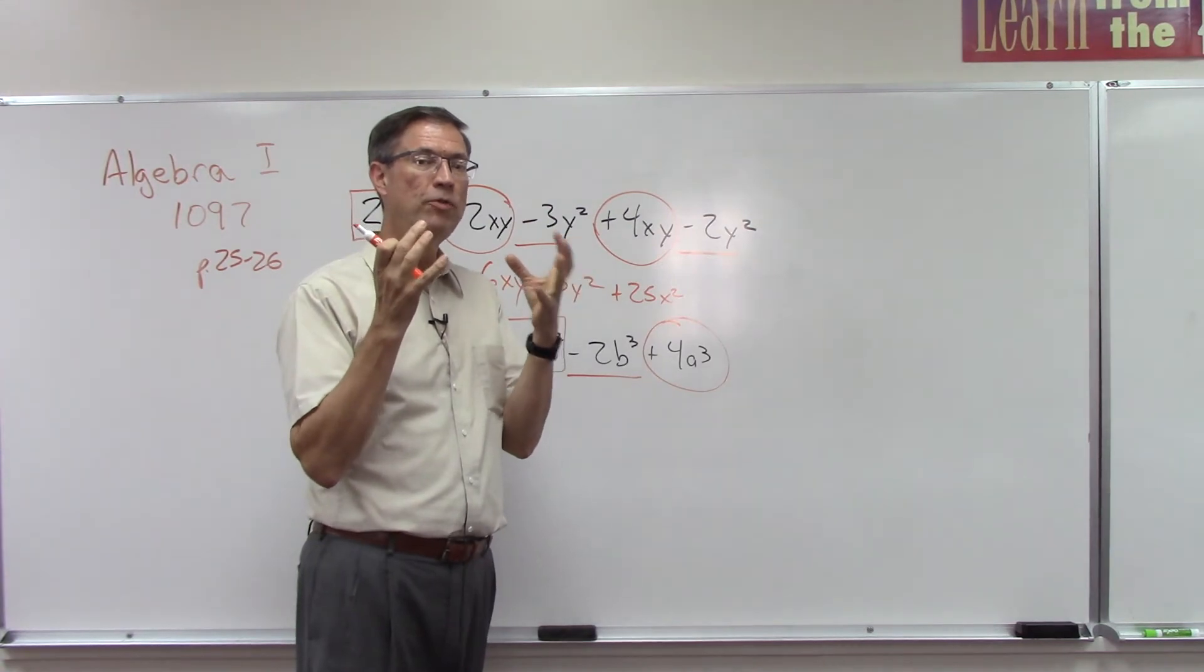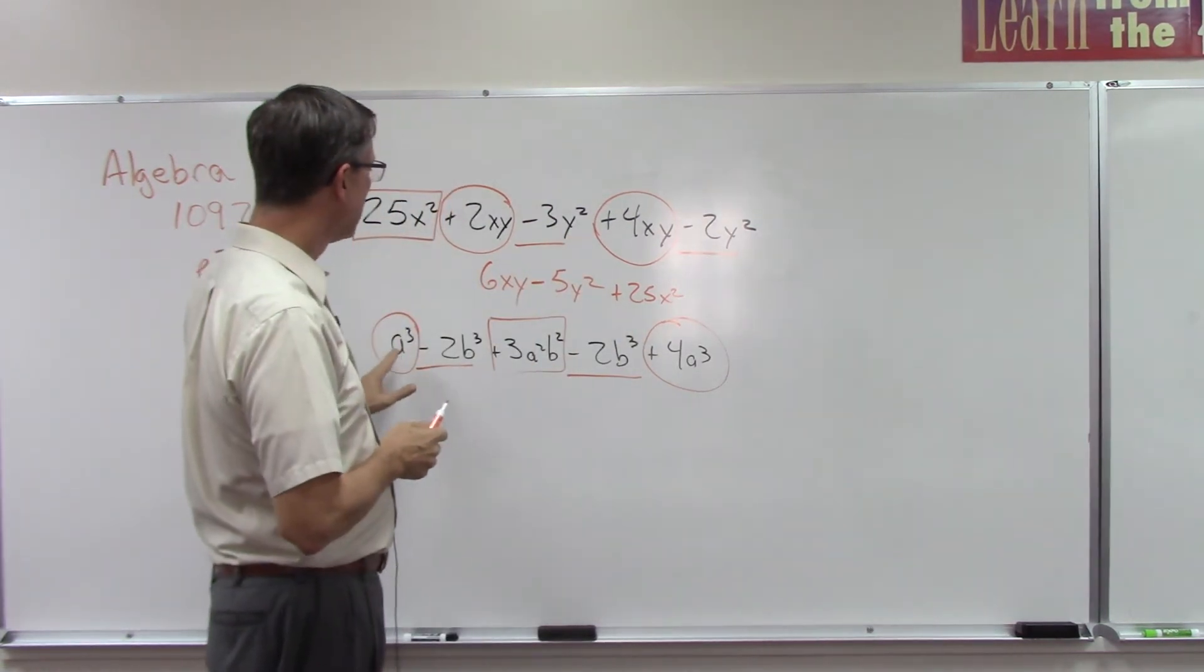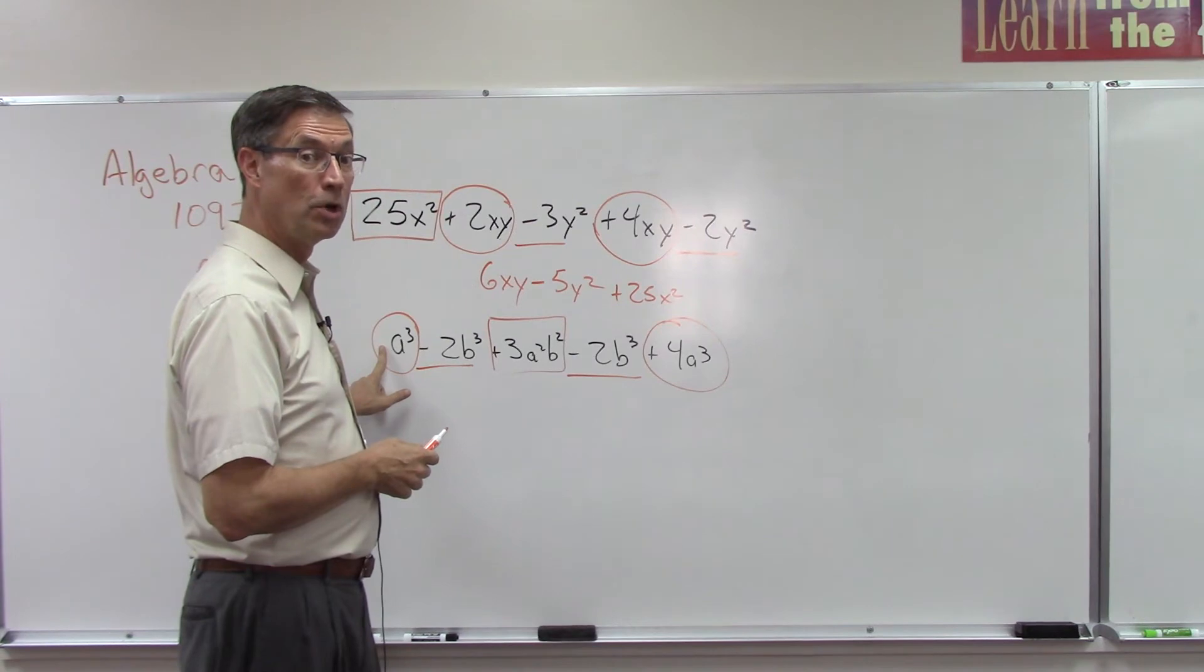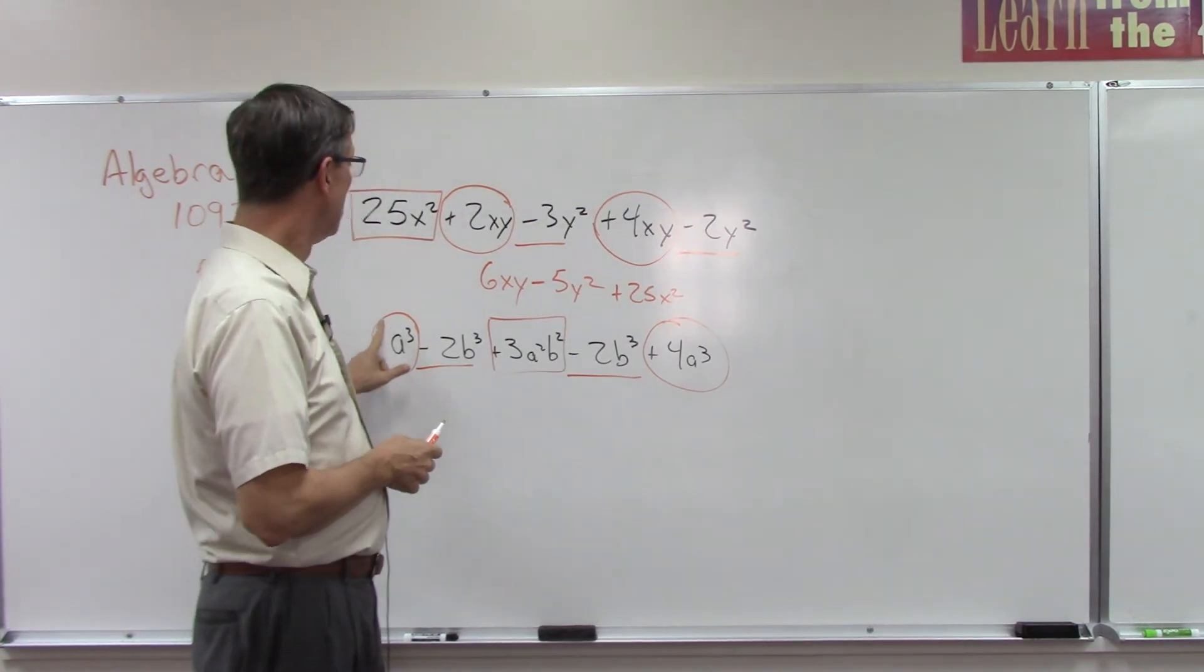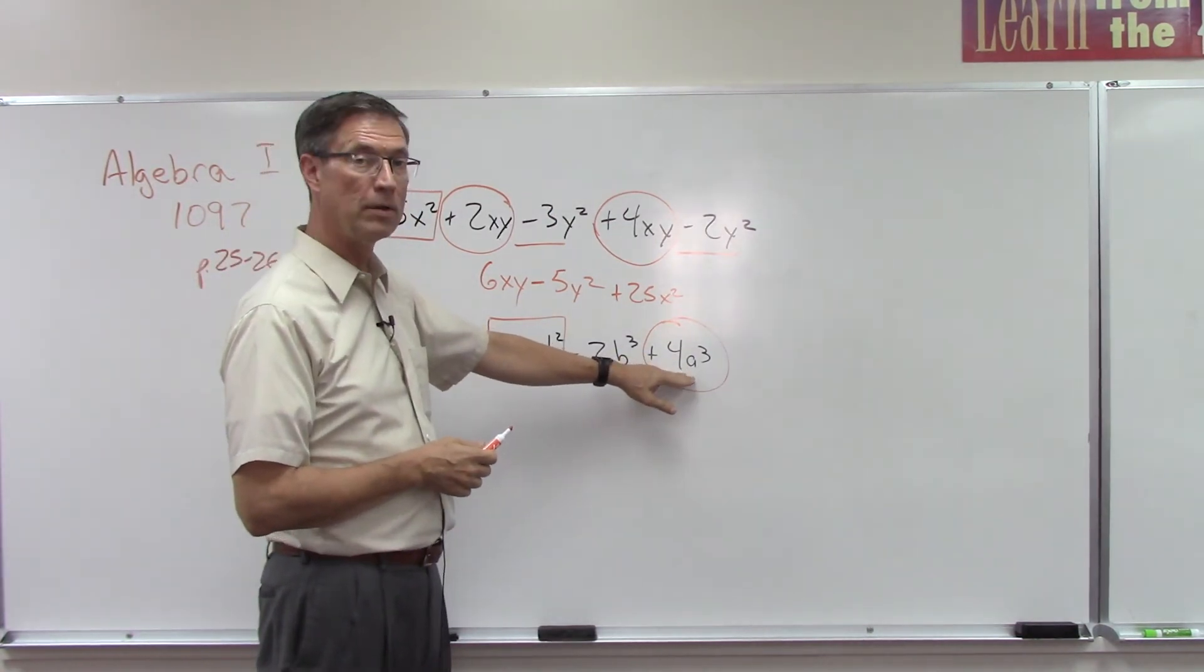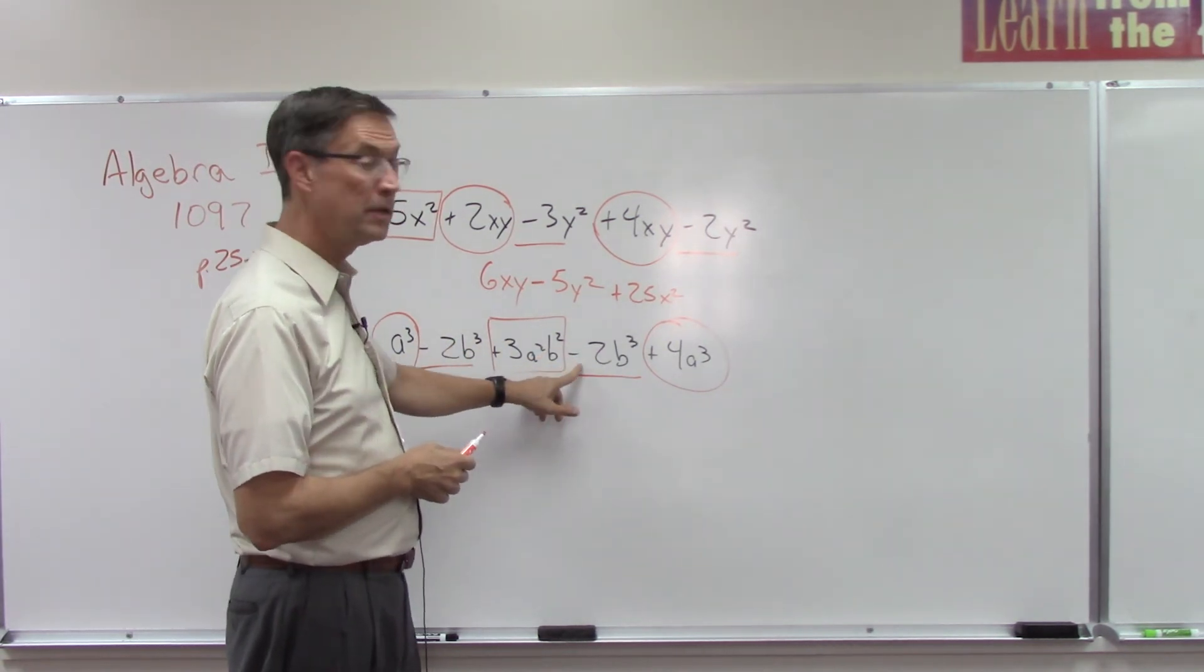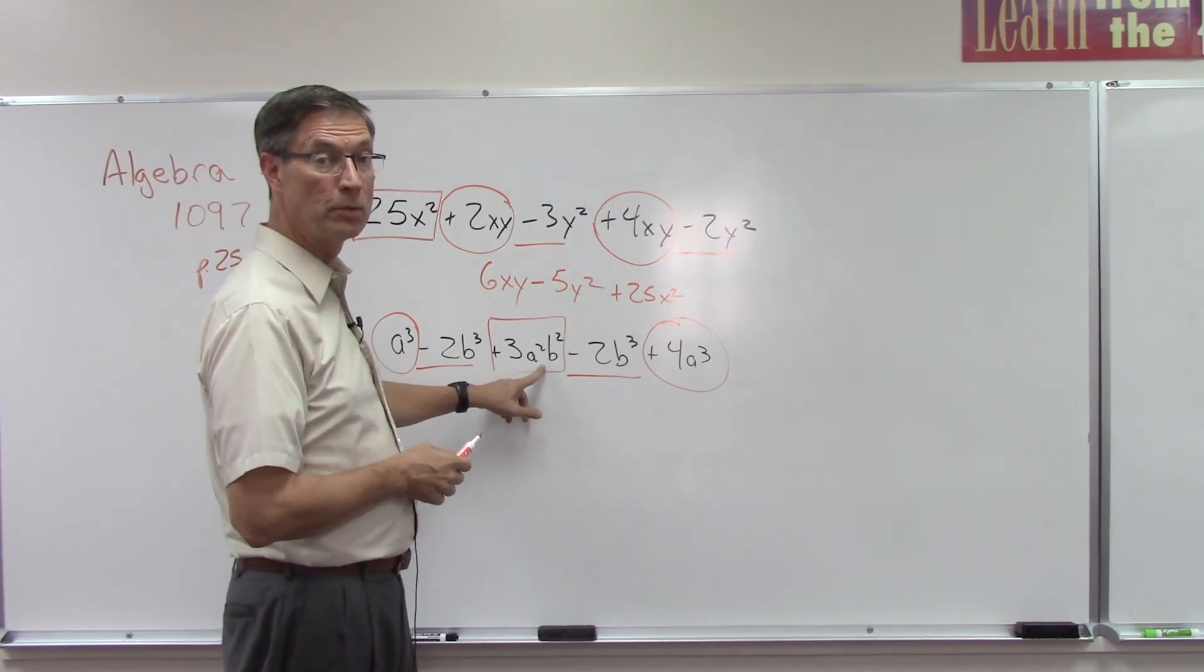Oh, these are like terms, okay. So now I can combine these. Remember, if there's no number in front, the number is always one, not zero. One. So we're going to add 1a³ plus 4a³. And then you can combine these - be careful, both negative, add and keep the common sign. And then this one doesn't have a like term, so we just have to tack it on as part of the answer.